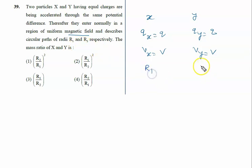Here the radius is r1, and here the radius is r2. We need to find the mass ratio of X and Y - that is, mass of X divided by mass of Y. First of all, we know the radius